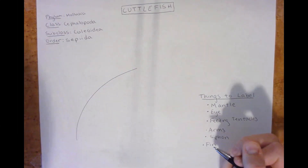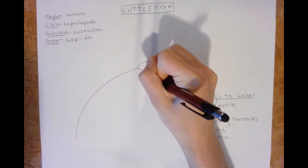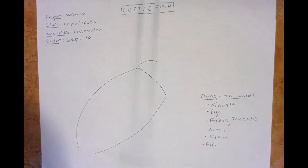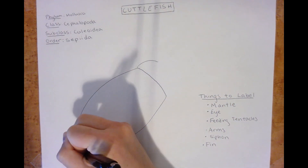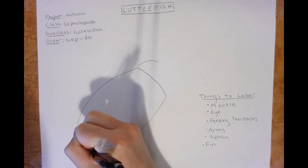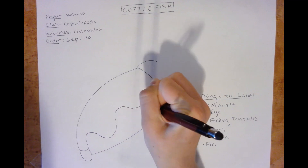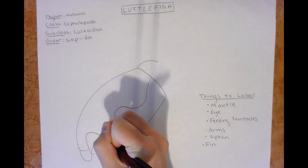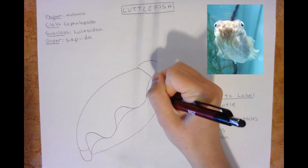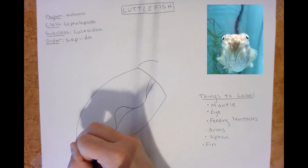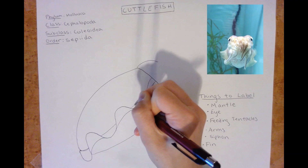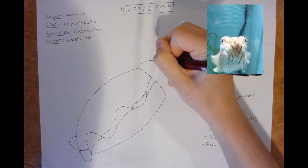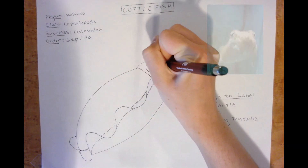We start by drawing the oval-shaped mantle, which encloses the cuttlefish's organs and the internal shell, which is called the cuttlebone. The cuttlefish's undulating fin extends laterally along the sides of the mantle. It's used for hovering and stability.